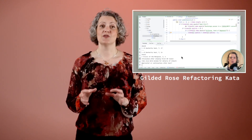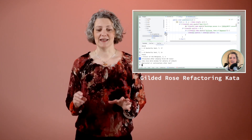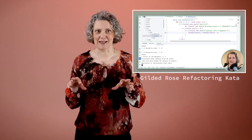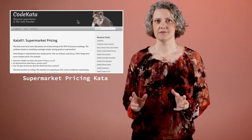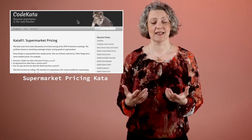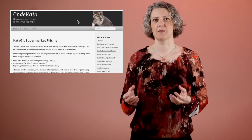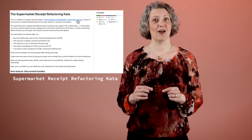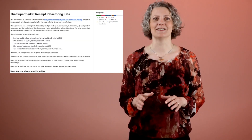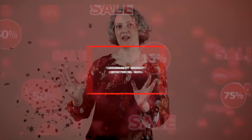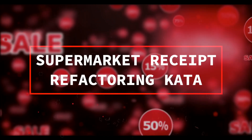If you've tried the Gilded Rose Refactoring Kata, you'll know how much fun it can be to unpick tangled logic and sort out a bad design. Supermarket Pricing is one of the original classic code katas from Pragmatic Dave Thomas, and I made it into a Refactoring Kata. This video is to encourage you to try my Supermarket Receipts Refactoring Kata — it's a great chance to improve your skills on a small, fun problem.